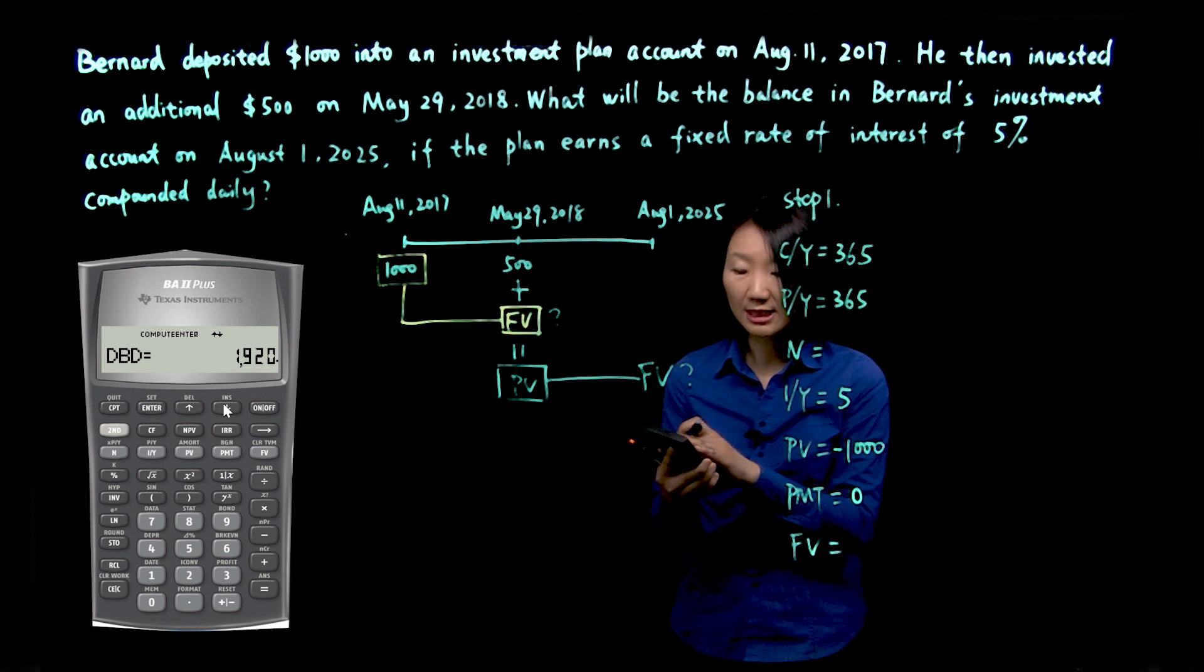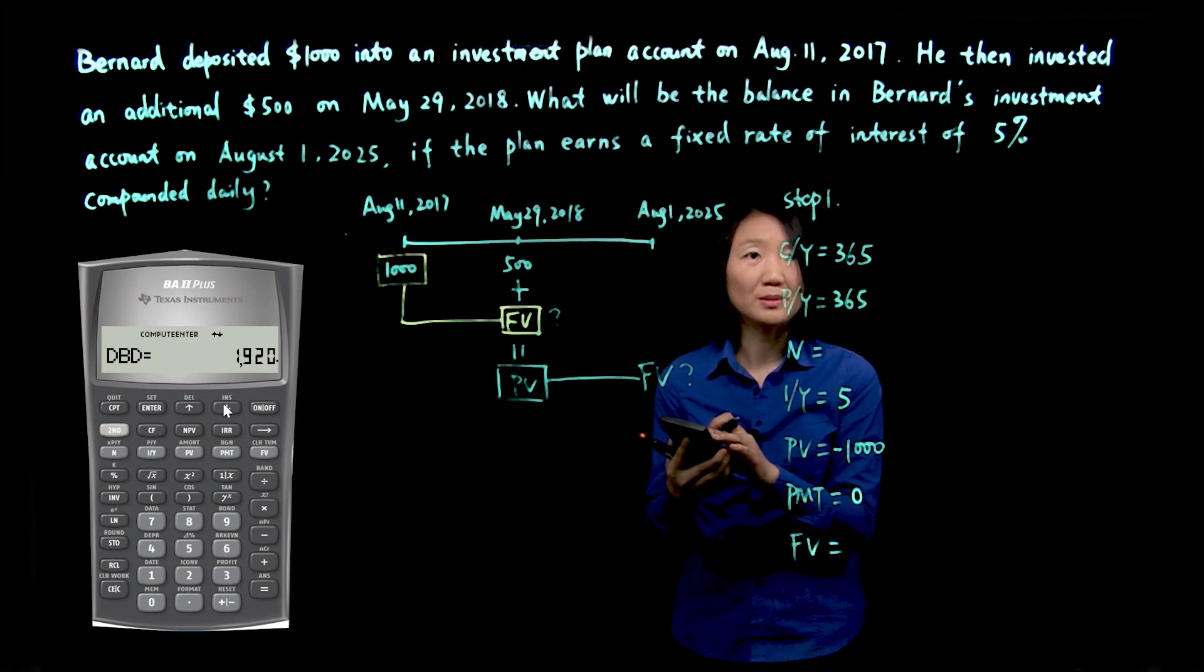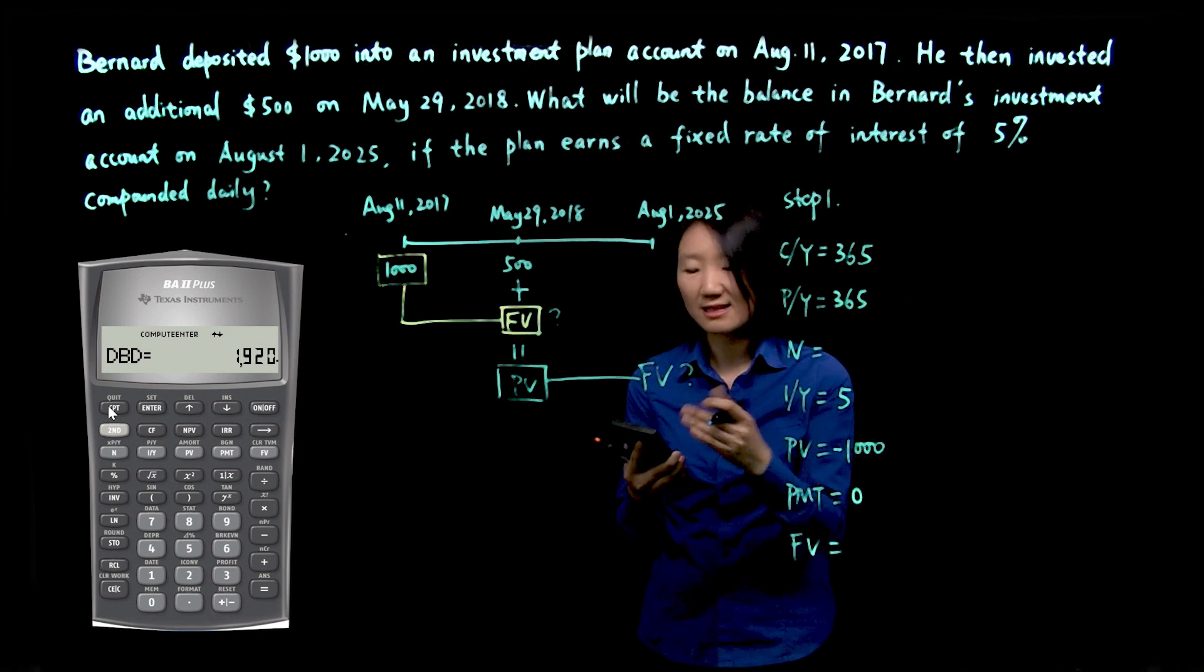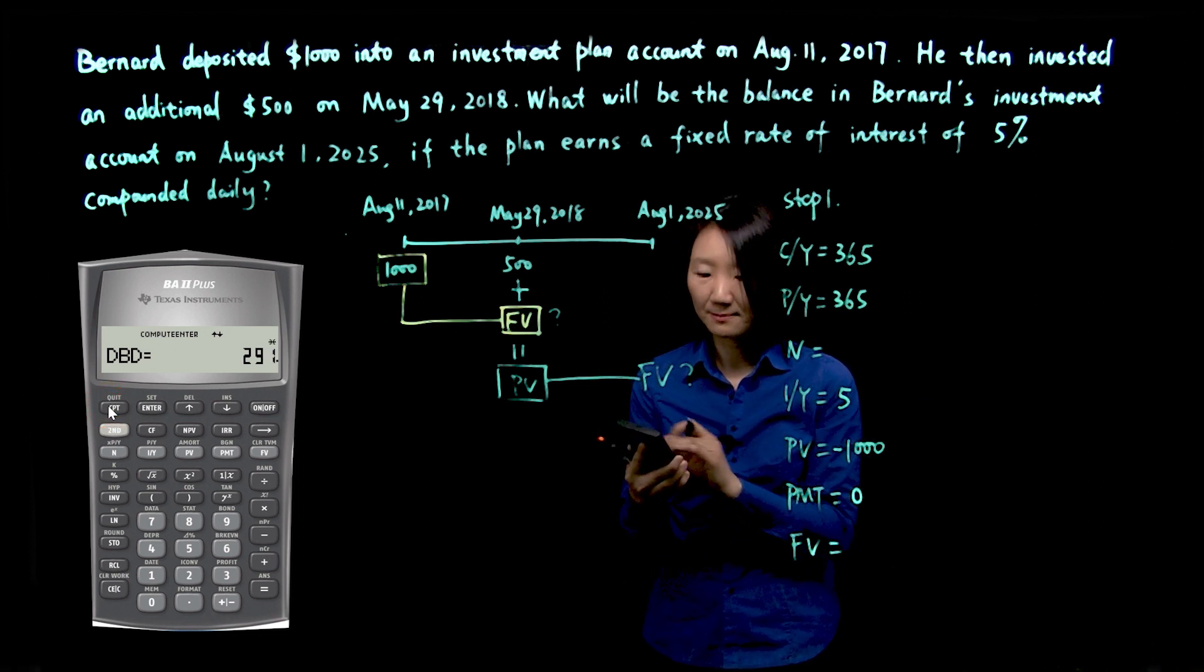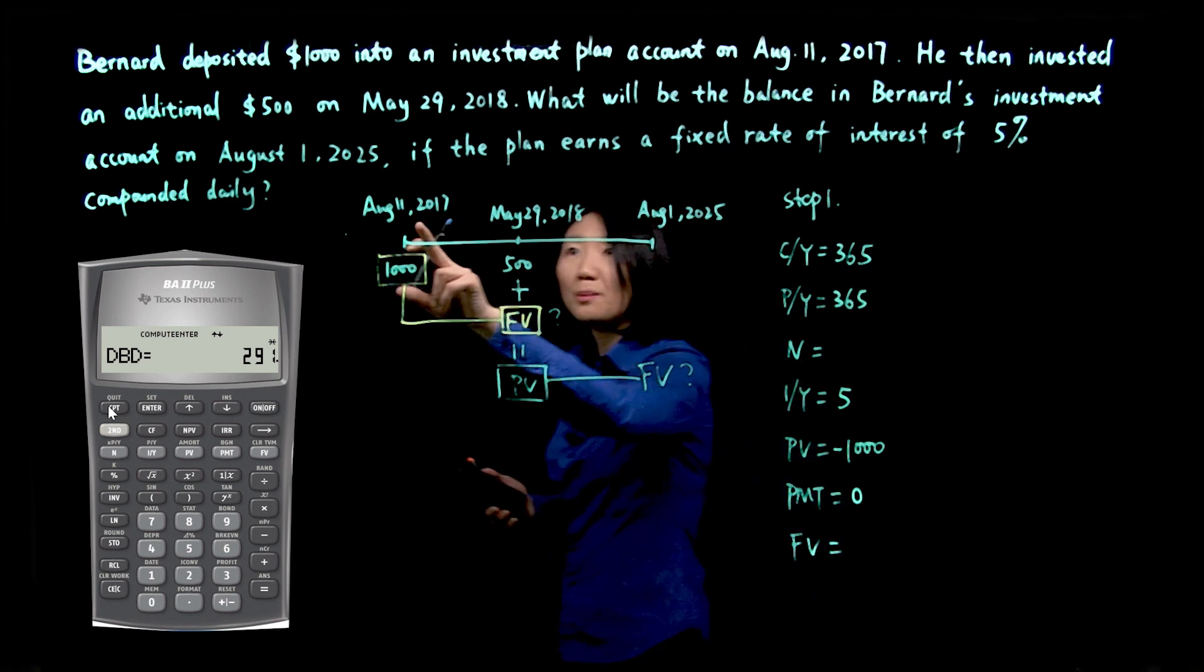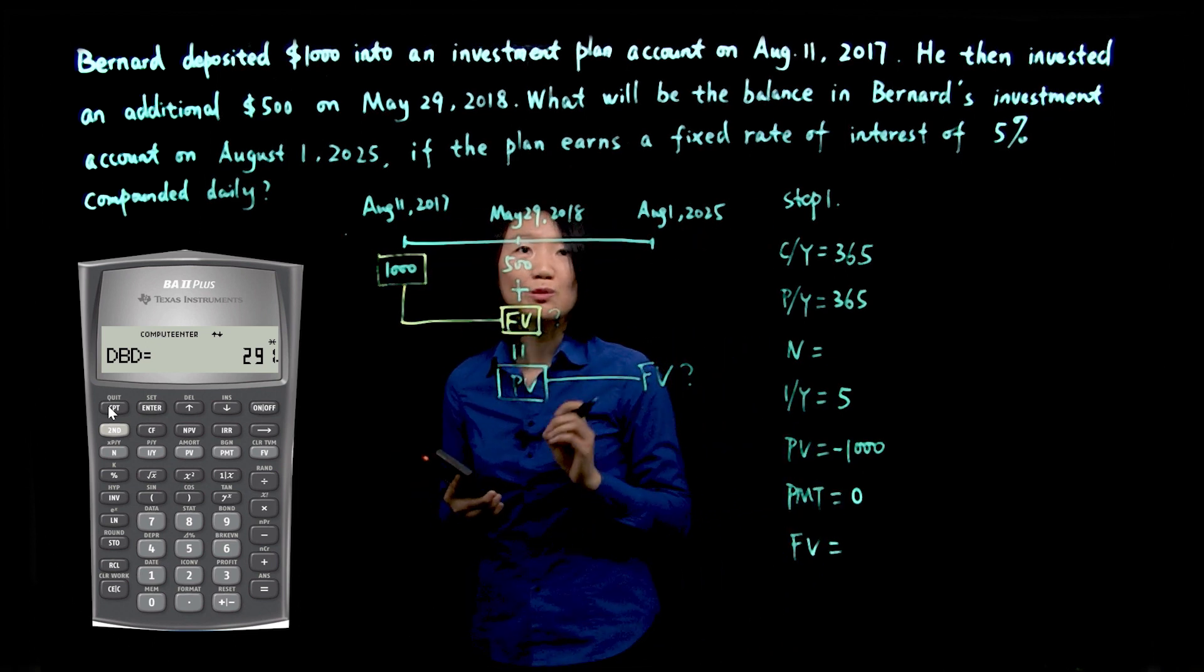You'll scroll down, DBD. You may see a number, but that's not your answer yet. That's probably from your previous calculation. Make sure you push compute. Compute gives us 291. So between these two dates are 291 days.